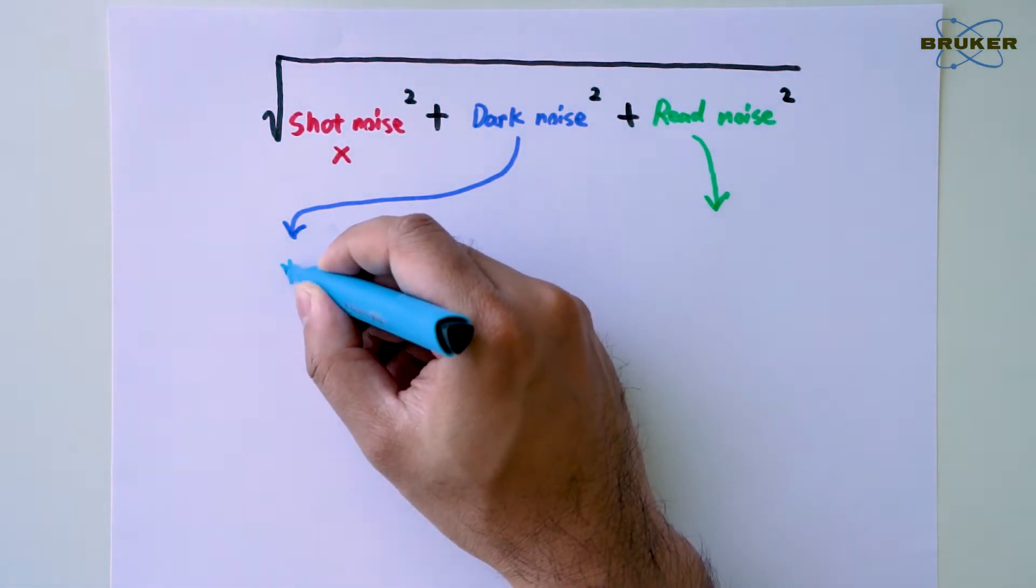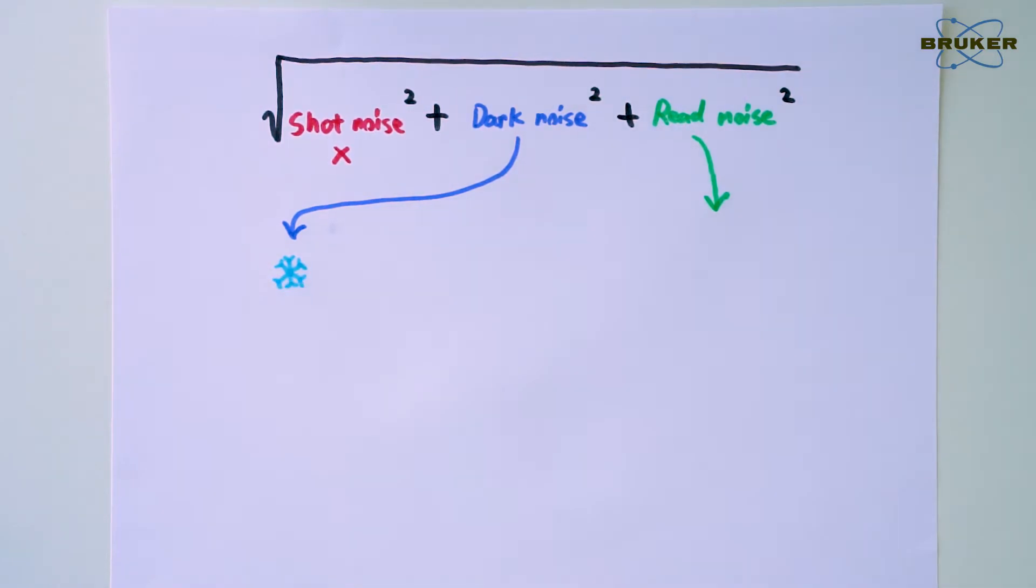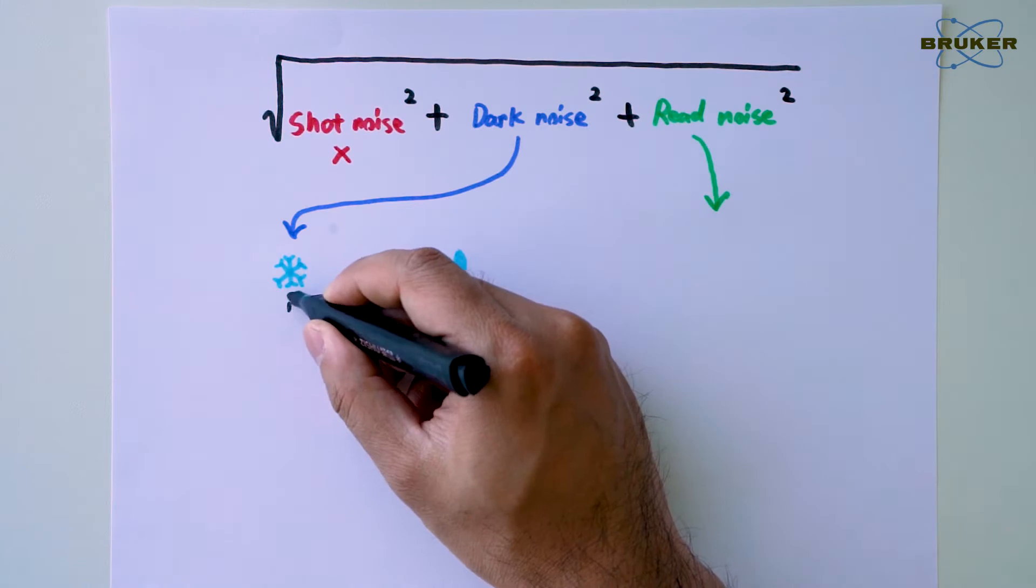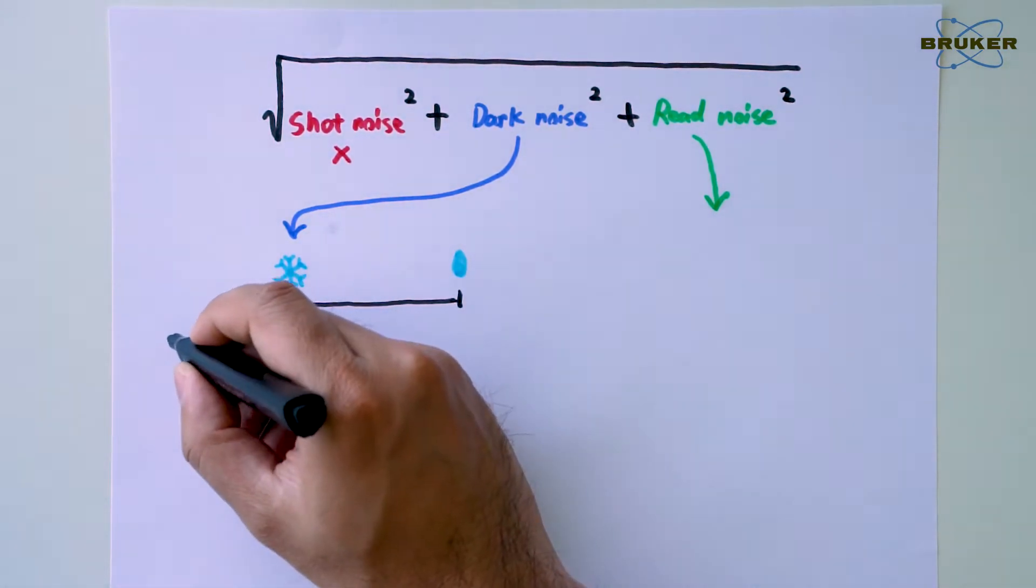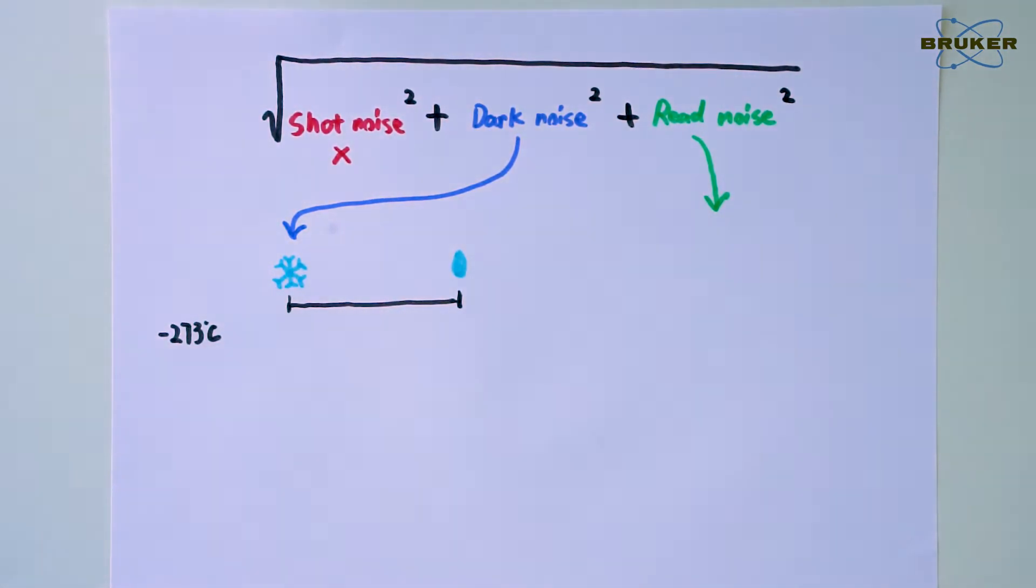The dark noise, in other words, non-optical creation of pixel charge, can be largely reduced by cooling the CCD. But that doesn't mean we should take it to absolute zero. With the decrease of temperature, not only dark noise but also quantum efficiency of the CCD reduces.